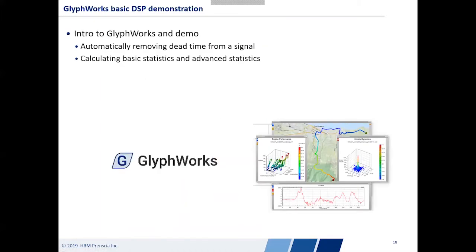We're going to do a quick demo to show how you could build a digital signal processing flow in Glyphworks. We're going to look at two examples: how to automatically remove dead time from a signal and calculate basic statistics both before and after removing that dead time. Let me shift over into the software now.